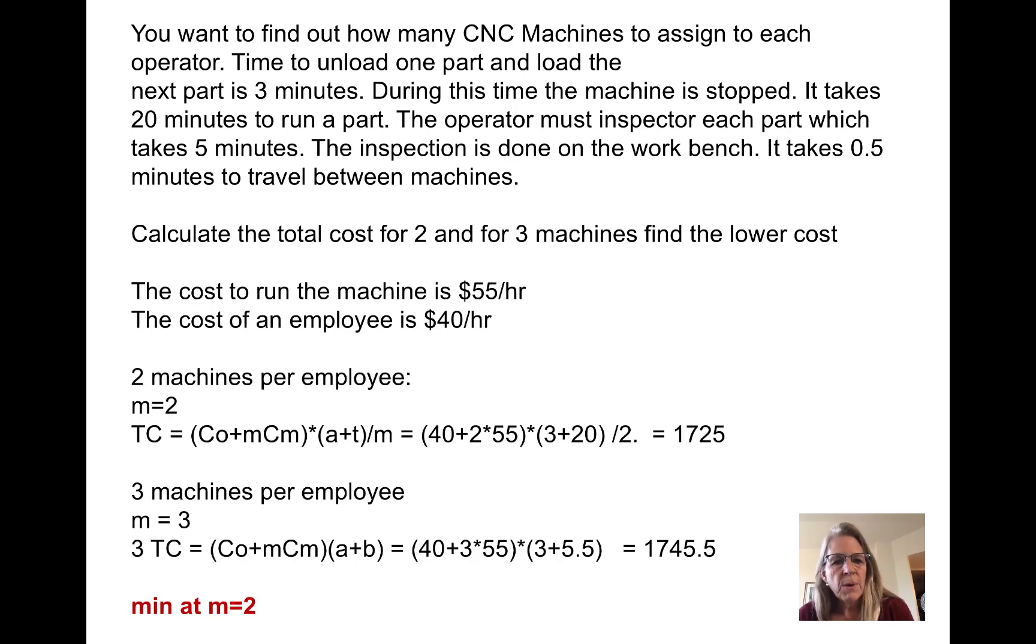When I have a cost to run the machine at $55 and a cost of an operator at $40, we do the total cost calculation for two machines and get $17.25. For three machines, we get $17.45. Therefore, it's the minimum cost at two machines, so we assign two machines for each operator.